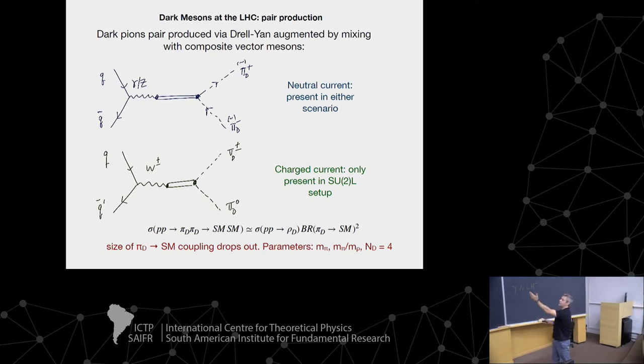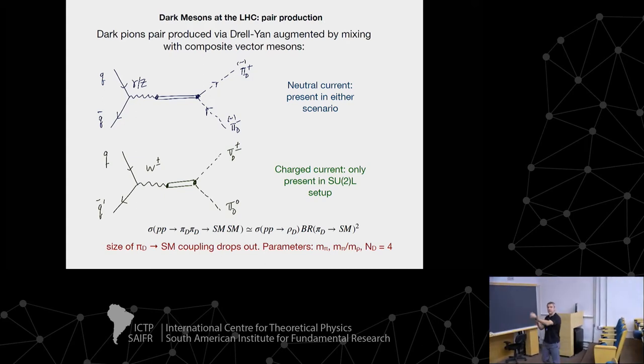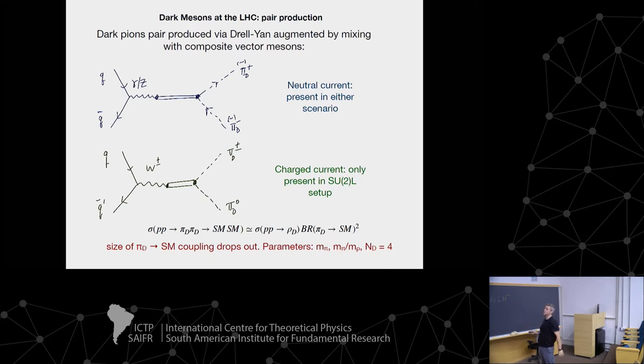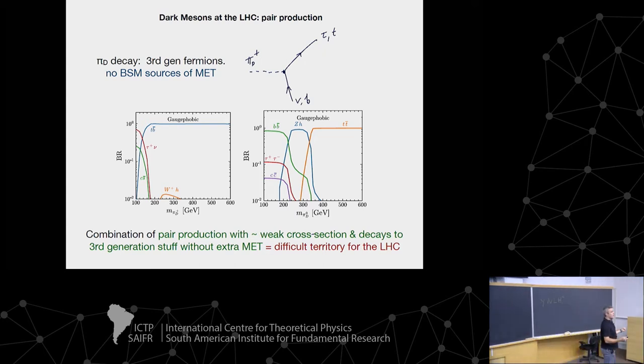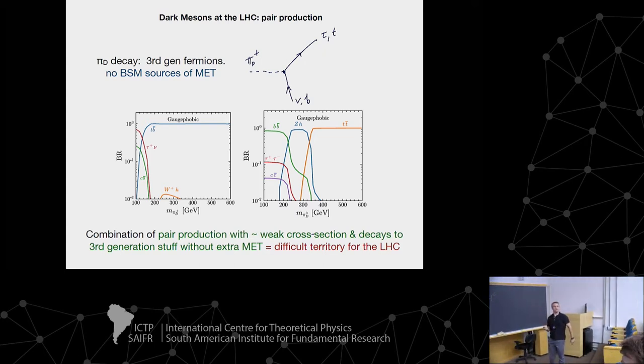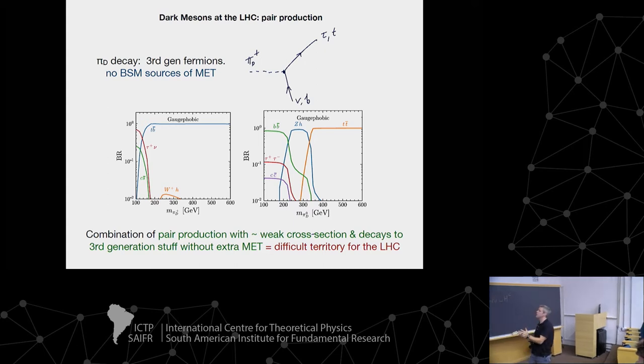Pair produce the pions. Pions are produced essentially through Drell-Yan. They're electroweak charged objects. I could do this through a neutral meson. So this is a photon or z mixes through that kinetic mixing term. This possibility, pi plus, pi minus, is there in either scenario. Electroweak strength, pair produced, no new missing energy. That is a recipe for very difficult territory for the LHC.